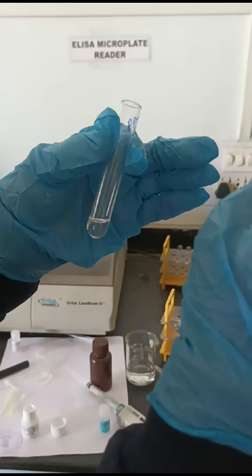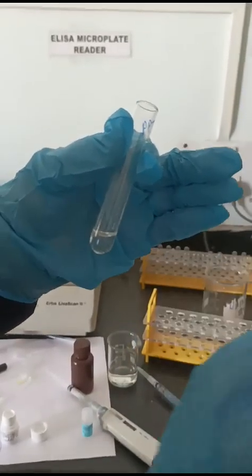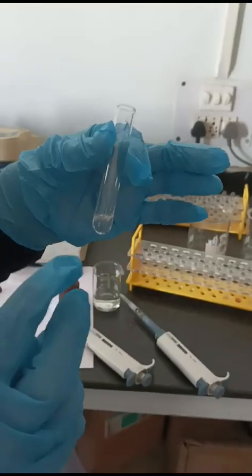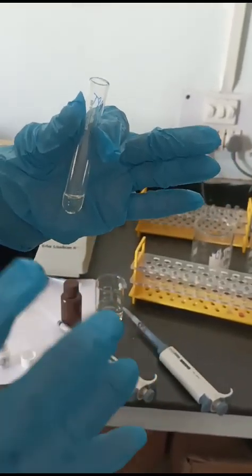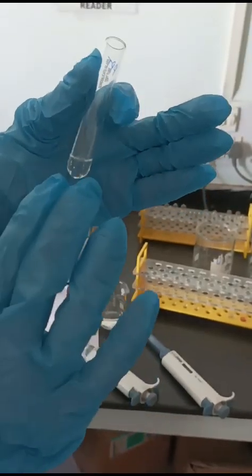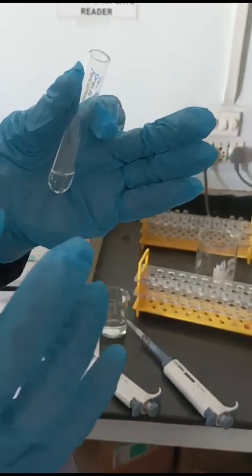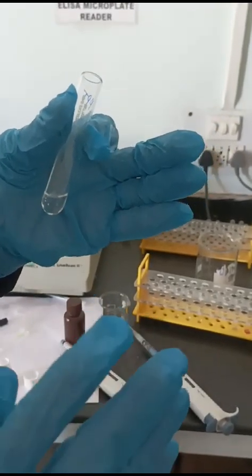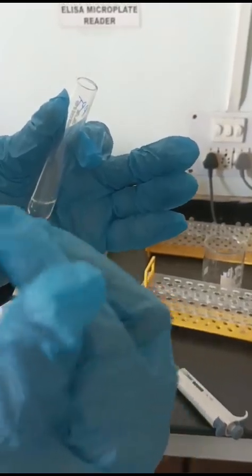This is how we prepare the sample for the estimation of HDL. This supernatant after centrifugation will be used as the sample. After getting this sample, we will take only the supernatant, 100 microliters.